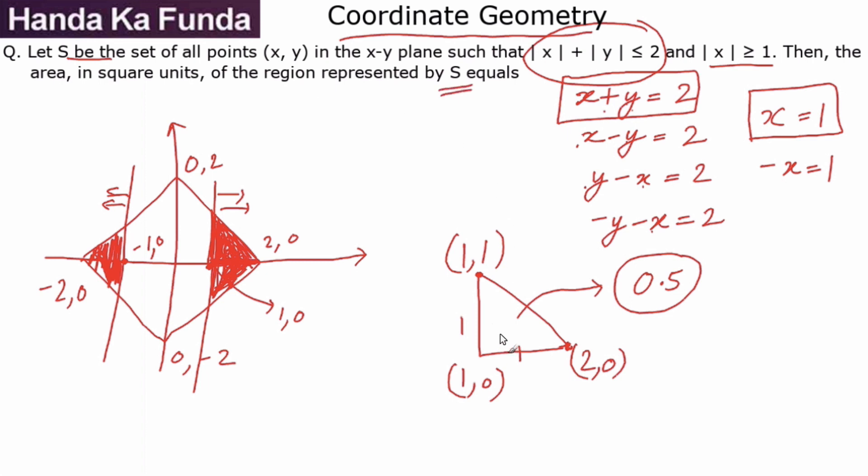To find out the area of S, or the complete region, I need to consider 4 such triangles: triangle 1, triangle 2, triangle 3, and triangle 4. So my required area or my required answer will be 4 times this value, or my answer would be 2.